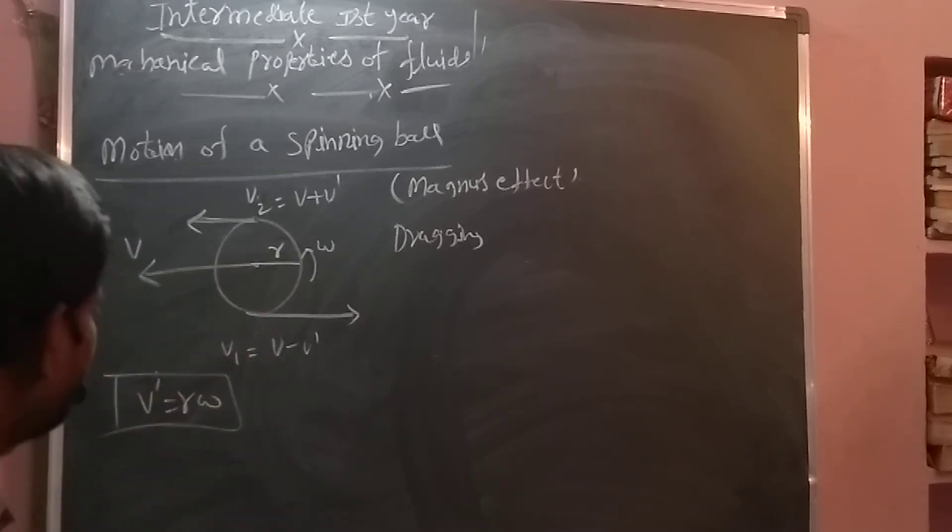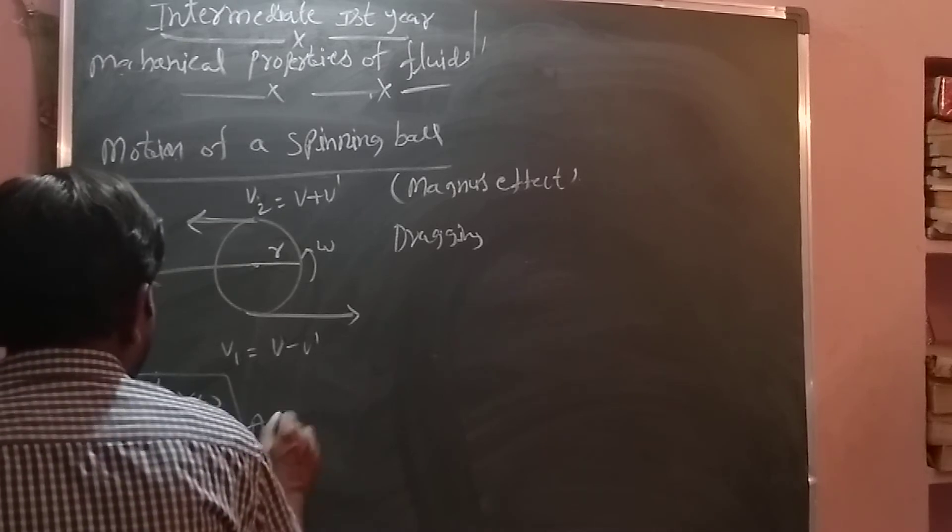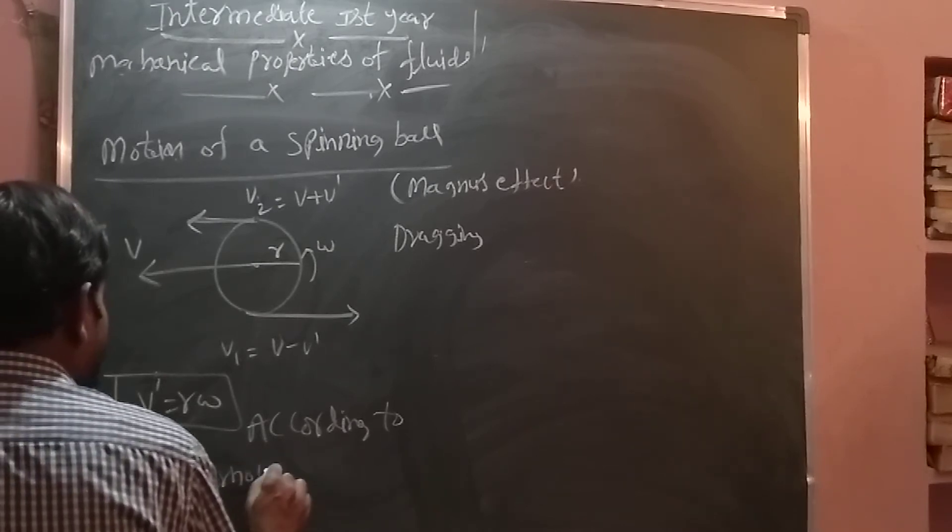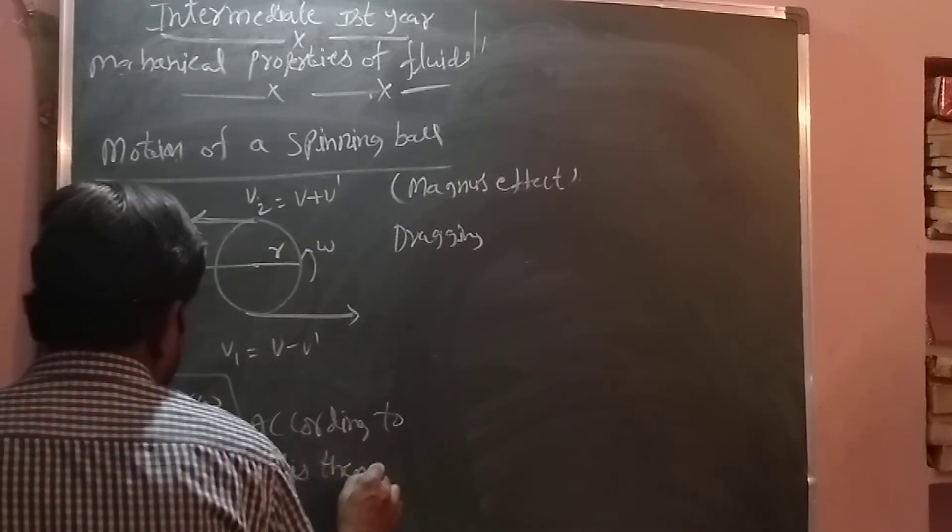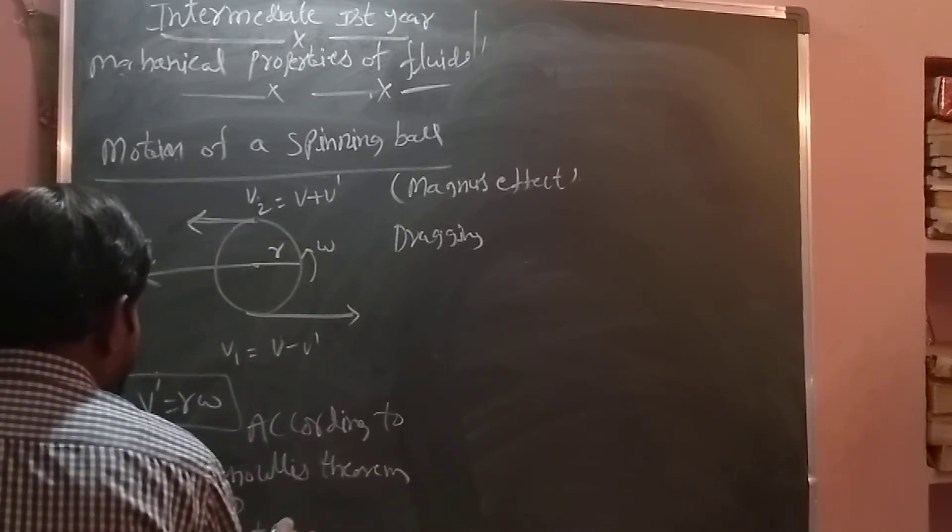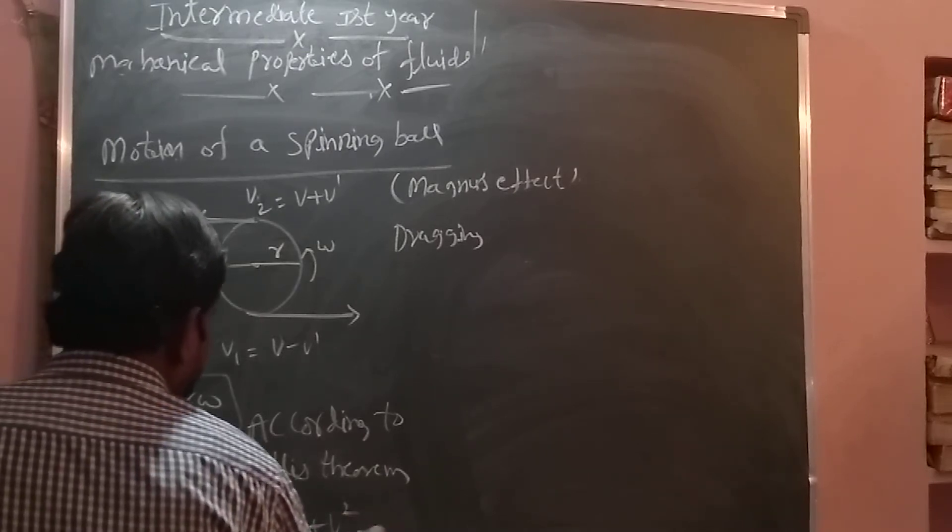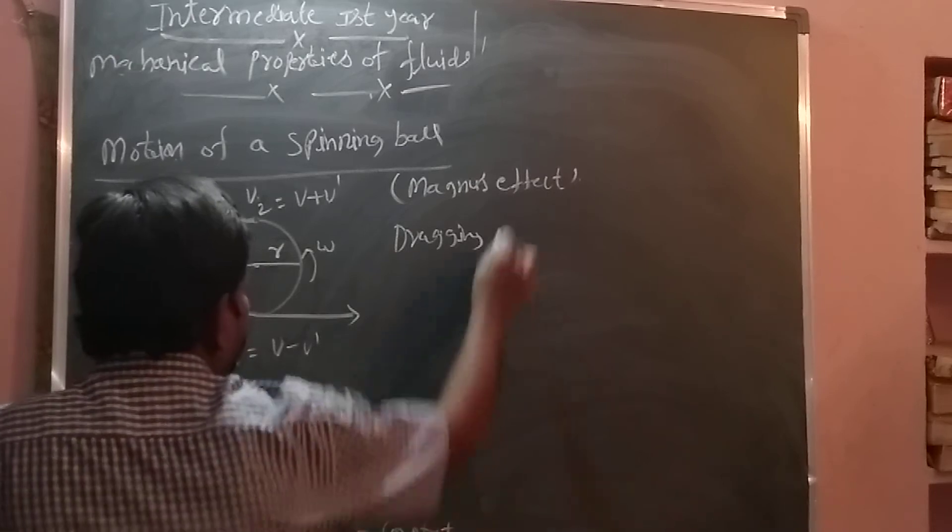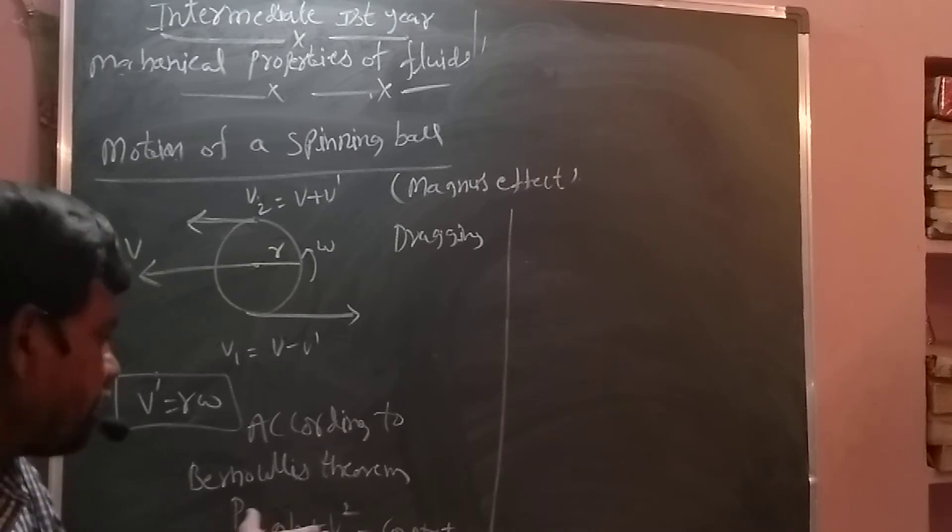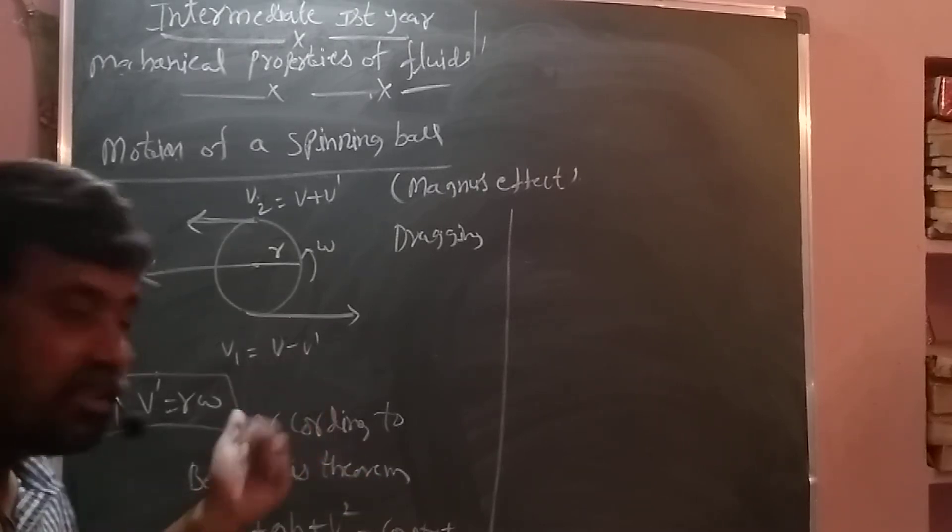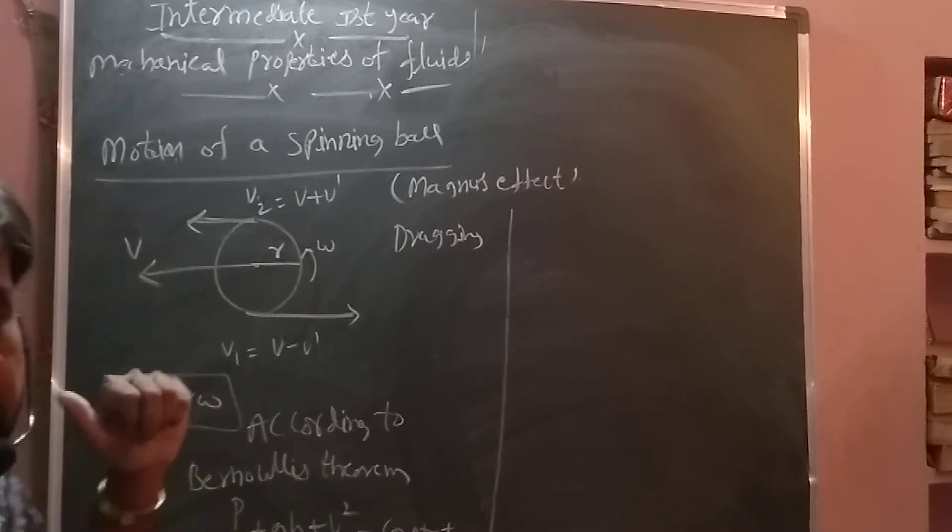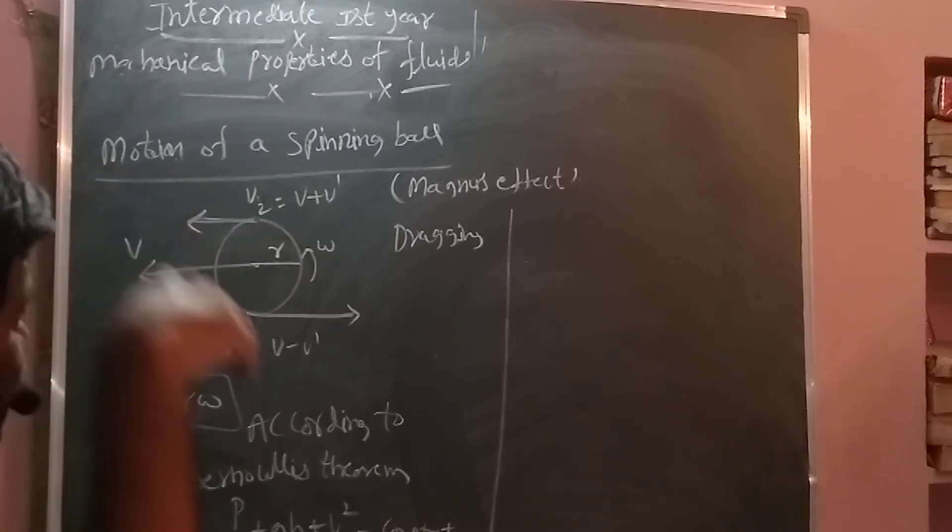Okay, now I am applying Bernoulli's theorem. According to Bernoulli's theorem, what is the formula? P by rho plus GH plus V square by 2 equal to constant. Otherwise you apply P plus rho GH plus V square by 2. This is pressure energy plus potential energy plus kinetic energy per unit mass. Otherwise P plus rho GH plus rho V square by 2. That is pressure energy, potential energy, kinetic energy per unit volume, anything you take or any area of cross section. That is called Bernoulli's theorem.